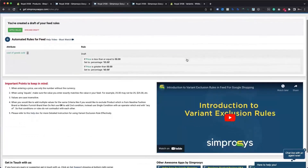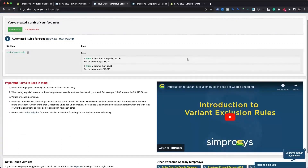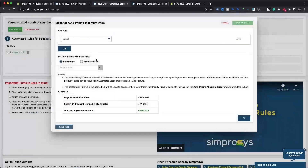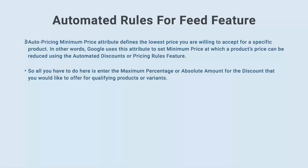Similarly, let's proceed to create an automated rule to automatically assign the value for the auto pricing minimum price attribute. Choose the auto pricing minimum price option from the Create a New Rule menu. This attribute defines the lowest price you are willing to accept for a specific product. Google uses this attribute to set the minimum price at which a product's price can be reduced using automated discounts or pricing rules. So you just need to enter the maximum percentage or absolute amount for the discount you would like to offer for qualifying products or variants.